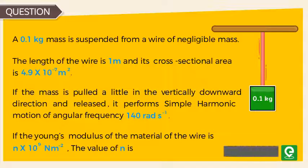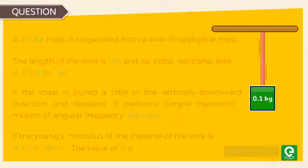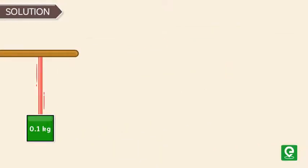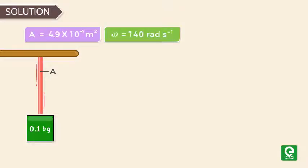Solution: We are given area equal to 4.9 × 10^-7 meter square, angular frequency is 140 radian per second, length of the wire is 1 meter, mass of the object equals 0.1 kg.